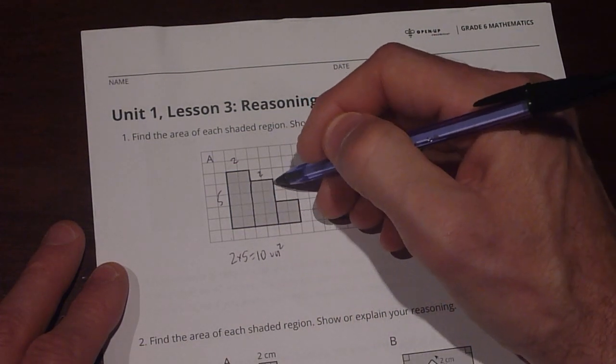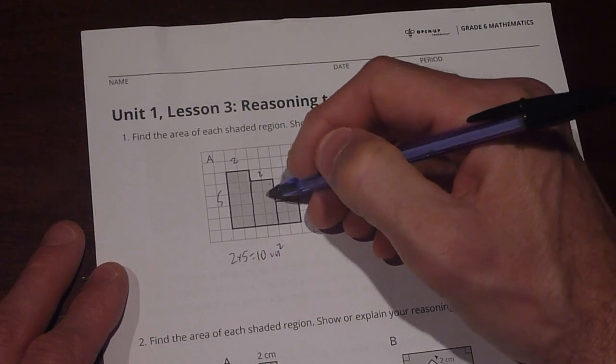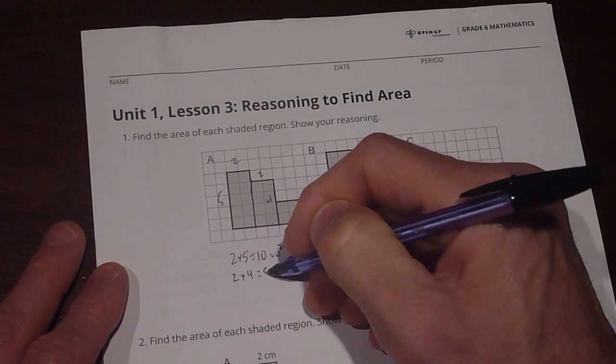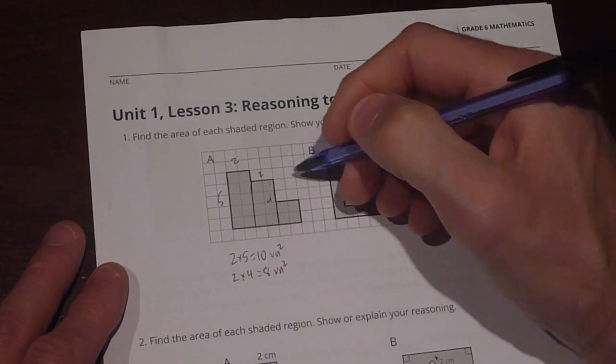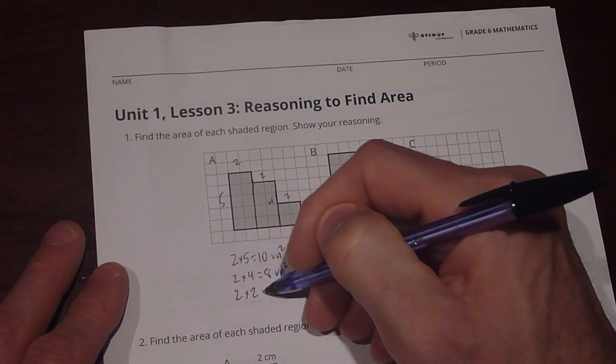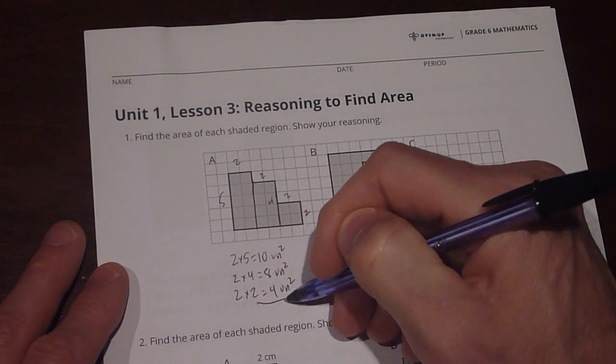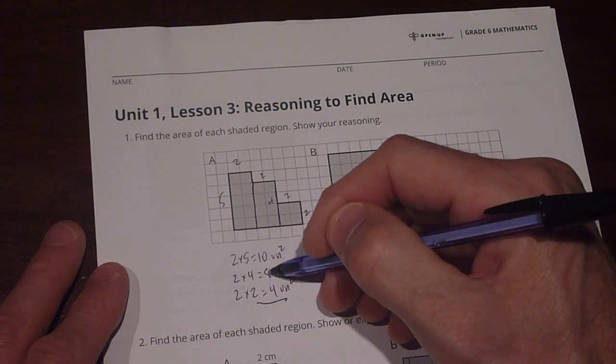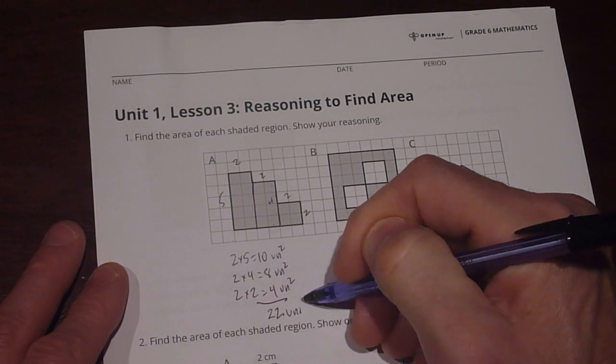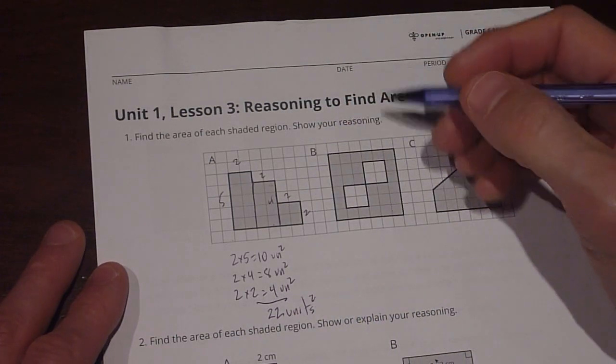And then this one is also 2, but it's 1, 2, 3, 4 units. So it's 4 units tall. So 2 times 4 equals 8 units squared. And then this one is 2 by 2. So then 2 times 2 equals 4 units squared. If I add all those up together, 10 plus 8 plus 4, I get a total of 22 units squared for figure A.